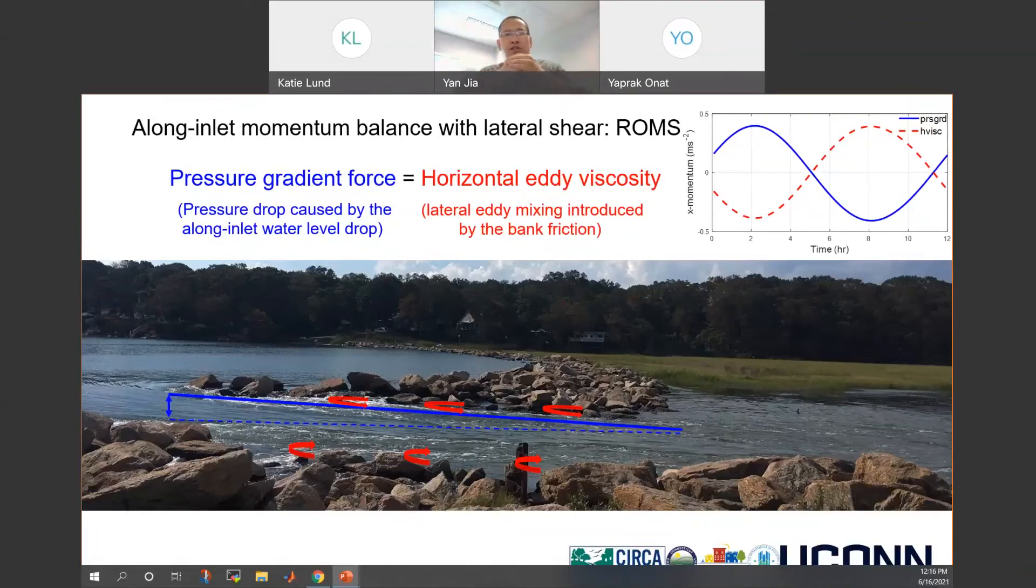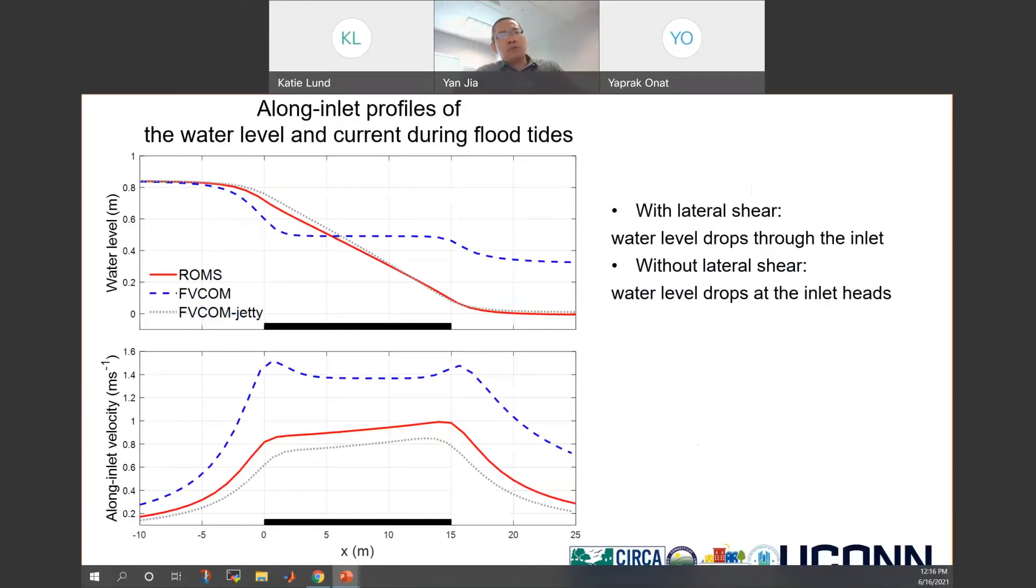What if we don't have lateral shear? Like for instance, the FVCOM case. Let's see another detailed plot. On this plot, I'm showing a long inlet profile where these black bars indicate the location of the inlet. You can see for ROMS case or FVCOM with jetties, those cases have lateral shear. Their water levels drop linearly through the whole inlet. But for FVCOM case, if they don't have lateral shear, their water level drops in the pattern of a kind of stairs. The sharp drop of water level only occurred at both the heads of the inlet. Inside the inlet, the water level is flattened. Same pattern showing in the velocity plot. They have uniform velocity inside the inlet. Only have sharp change right at the heads.